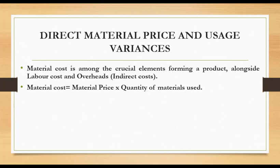Material cost is material price times quantity of materials used — price times quantity. When analyzing variances, we look at variances due to changes in price as well as variances due to changes in quantity. Variances due to changes in price we call material price variances, and those due to changes in quantity we call material usage variances.